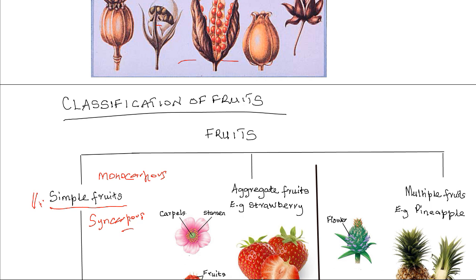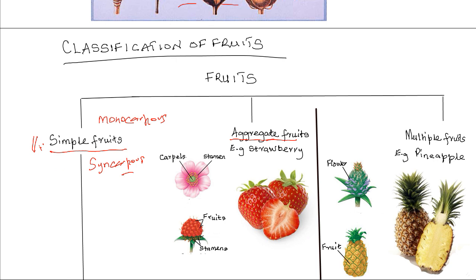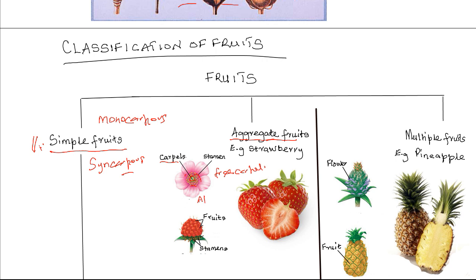The second category are the aggregate fruits. Aggregate fruits develop from a single flower in which there are several carpels that are free — in other words the gynoecium is apocarpous. In the aggregate fruits, each carpel develops into an individual fruit, with the other parts of the flower like the stamens withering and falling off in time. So each free carpel develops into an independent fruit.